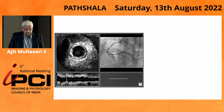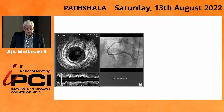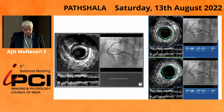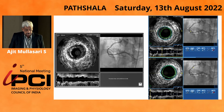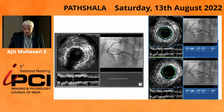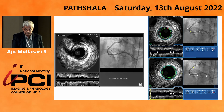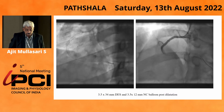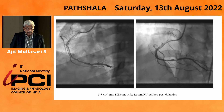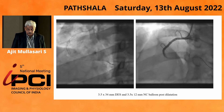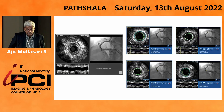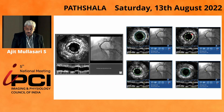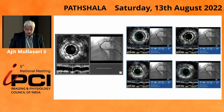We now do an IVUS pullback to size the vessel and the length of the lesion to fix that dissection. You can clearly see that what we need is approximately a 3.5mm size stent. You can see the lumens here and the proximal lumens to decide what size of stent is required. So we put a 3.5x34mm DES and then post-dilate with a 3.5x12 NC balloon. We again do an IVUS to check whether the lumens are okay, and now we have fixed that spot. The stent is okay; the proximal and distal lumens are okay.